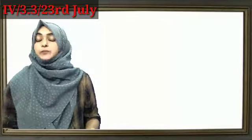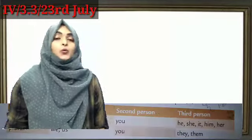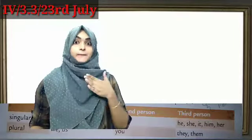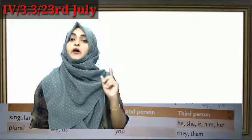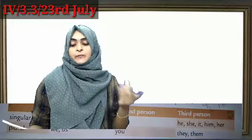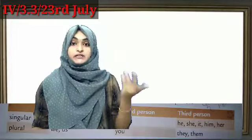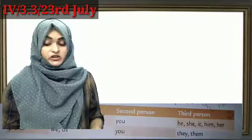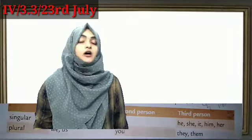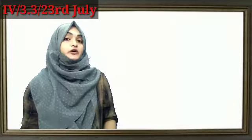In the first person point of view, we can use I, me, we, and us. The second person point of view uses 'you.' For the third person, we use he, she, it, him, her, they, and them.